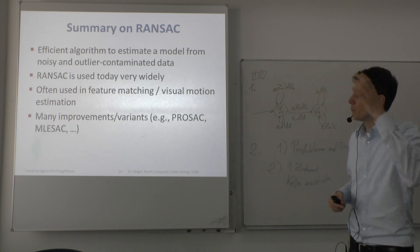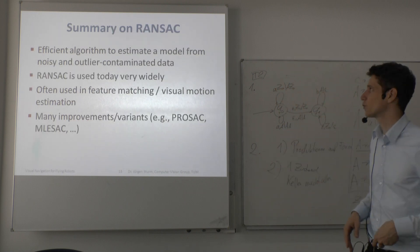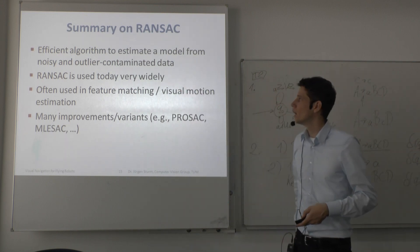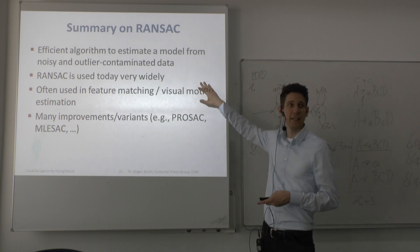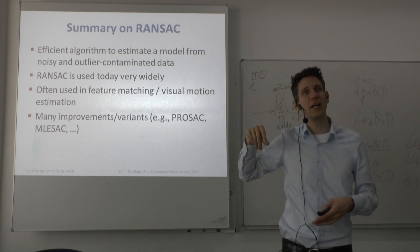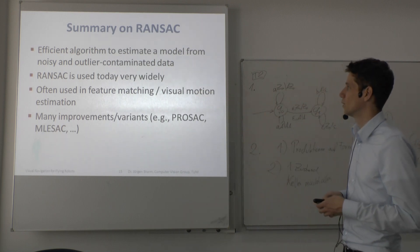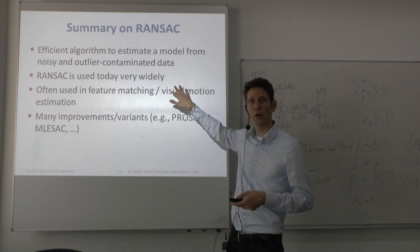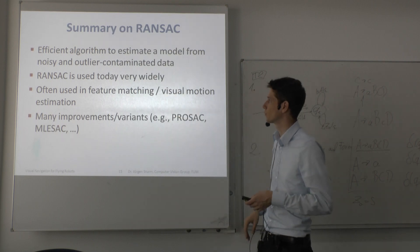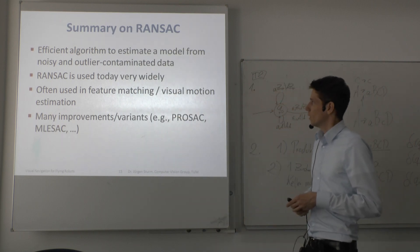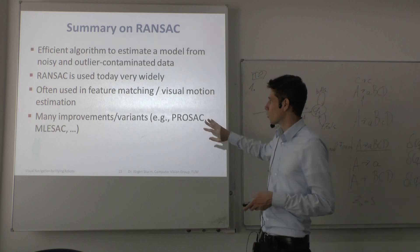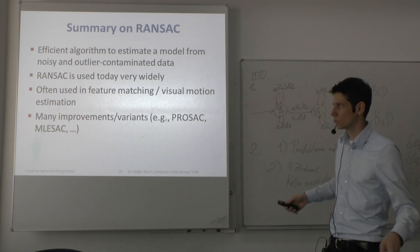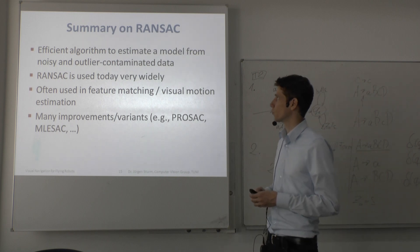In summary, RANSAC is a really efficient algorithm to estimate a model when you have outliers in your data. It is used very widely for all kinds of things, for example a lot for visual motion estimation with the eight-point algorithm. There are also many different variants and improvements to refine it.